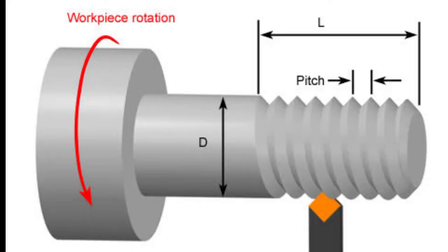4. Threading. Threading is a turning operation in which a tool moves along the side of the workpiece, cutting threads in the outer surface. A thread is a uniform helical groove of a specified length and a pitch. Deeper threads need multiple passes of a tool.